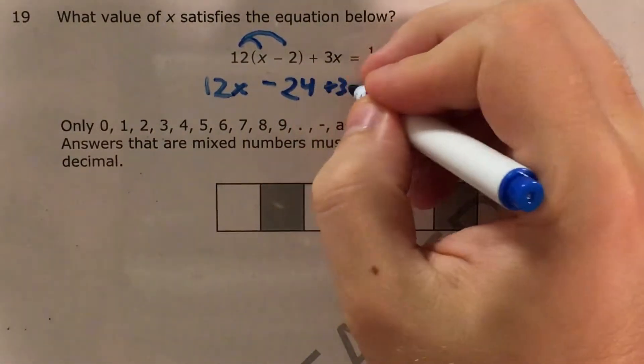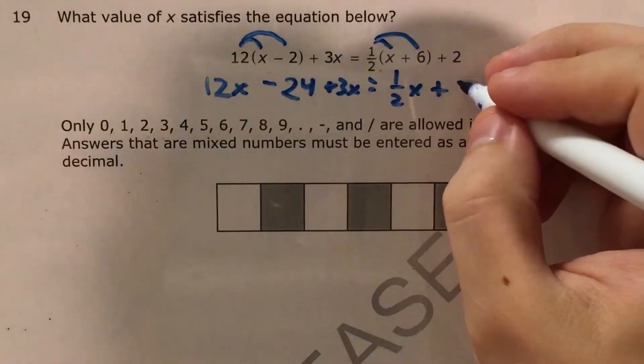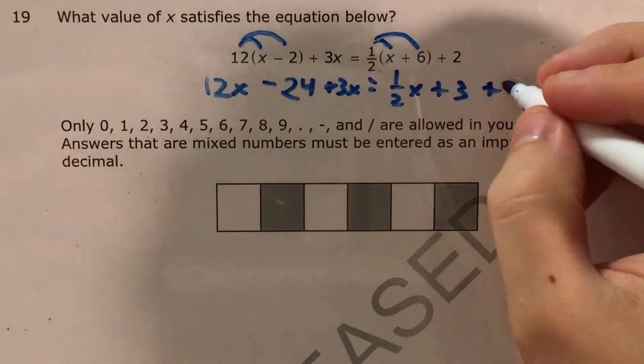Now over here I'll need to multiply 1 half times x and then 1 half times 6 which would be plus 3 plus 2.